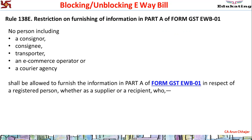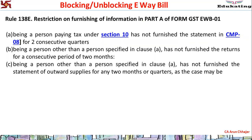EWB-01, as we all know, is the e-waybill. The e-waybill can have two parts: Part A and Part B. Rule 138E states that no person - whether the consigner, consignee, transporter, e-commerce operator, or even courier agency - is allowed to enter the GST number of a registered person in Part A, whether as a recipient or as a supplier.